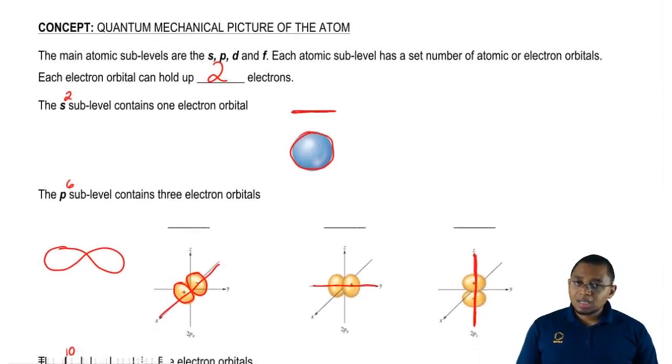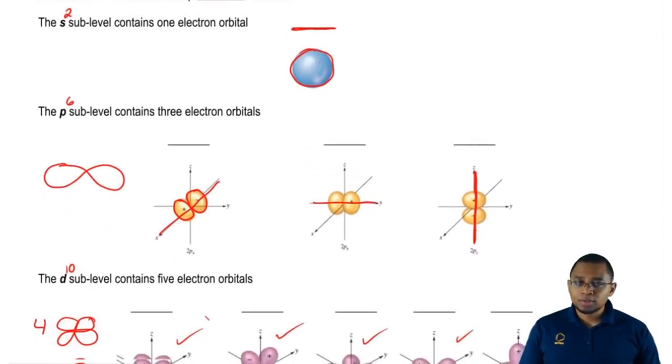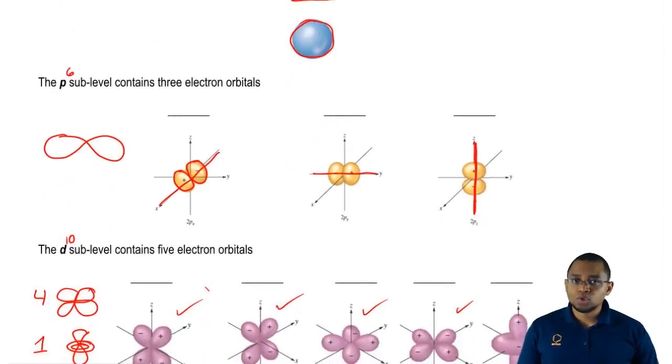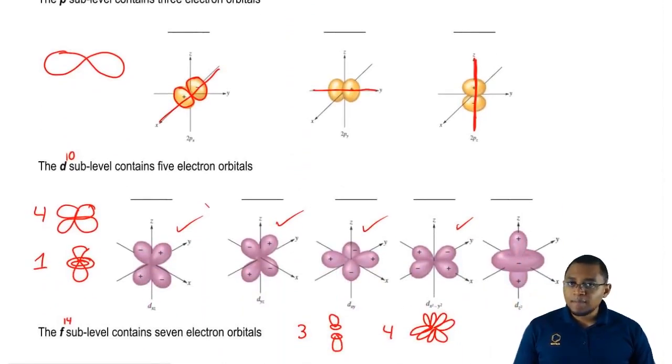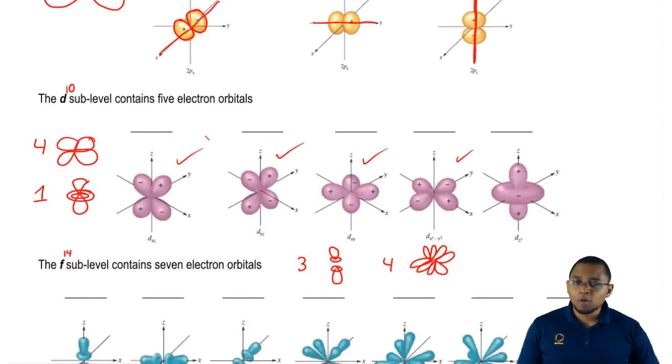There's four sublevels. Each sublevel has different number of electron orbitals. Each electron orbital can hold up to two electrons. Remember these fundamentals because from here, we're going to move on to the quantum numbers. The quantum numbers are based on these simple ideas which help build up to more complex ones later on.